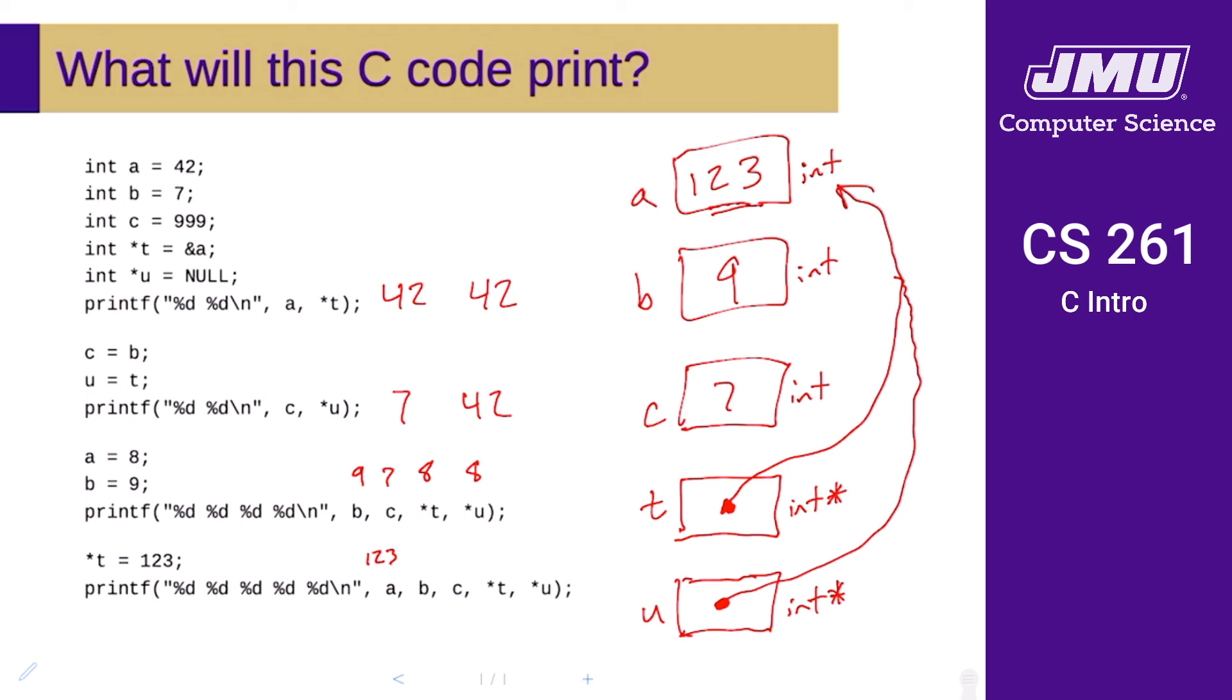B is still going to be 9, c is still going to be 7, and then both t and u are still pointing to a, so we're still going to get 123 for both of those.